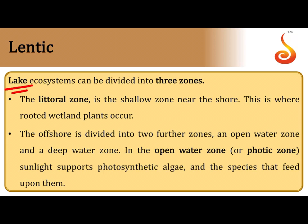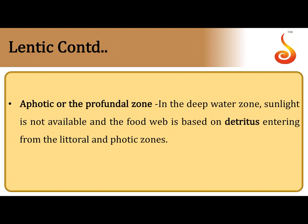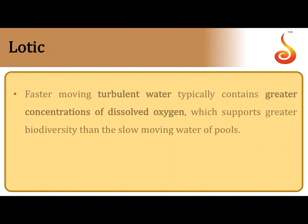In a lentic ecosystem like a lake, the shallow water near the shore is the littoral zone, and the open water zone is the photic zone. The deeper part of the lake receiving little or no sunlight is the aphotic or profundal zone, where the food web is entirely based on detritus from dead and decaying matter settling from surface waters.